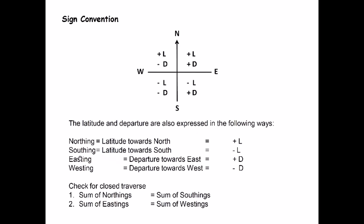In surveying, we usually call latitudes and departures as northing, southing, easting, and westing. Northing means latitude is towards the north and it's positive. Southing means latitude is towards the south and it's negative. Easting means departure is towards the east and it's positive. Westing means departure is towards the west and it's negative. Since the summation is equal to zero, the sum of northings must equal the sum of southings, and the sum of eastings must equal the sum of westings. This is for a closed traverse, because whatever distance it covers towards north, the same distance it covers towards south.